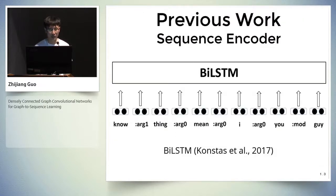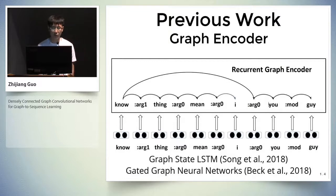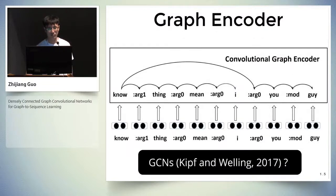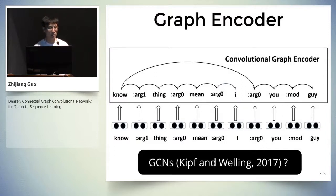One existing approach is to linearize the AMR graph into a sequence, then feed the sequence into a sequence encoder to get the representations. However, useful structural information will be lost in this process. Recent works leverage graph encoders including graph state LSTM and gated graph neural networks to encode the input graph directly. Both of these approaches use recurrent neural networks to learn the representation of graphs. Compared to recurrent neural networks, convolutional neural networks are easier to parallelize and more amenable to hardware acceleration.